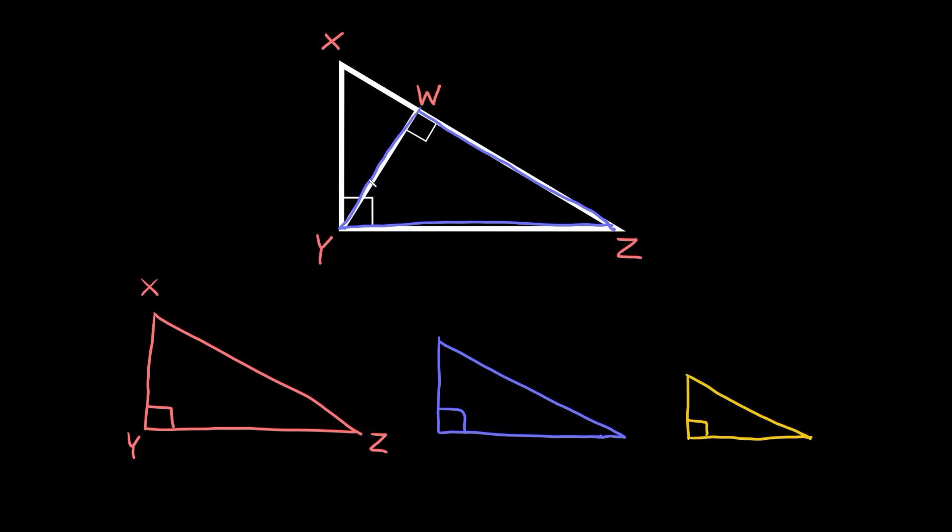You can see that on this blue triangle the right angle is labeled as W. So we're going to label the right angle down here as W as well. Now as you can see the shortest side of the triangle goes from W to Y. So this short side must go from W to Y.